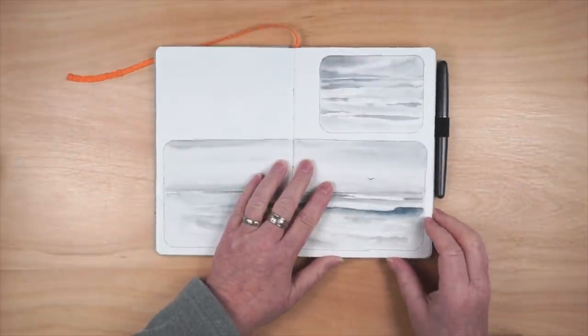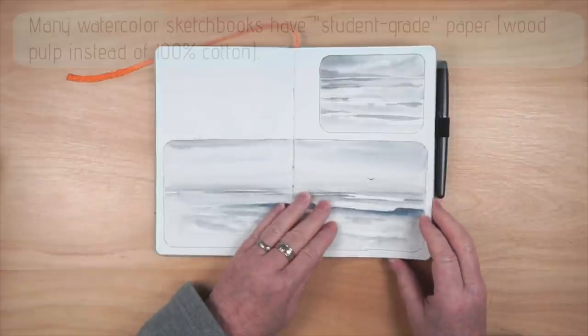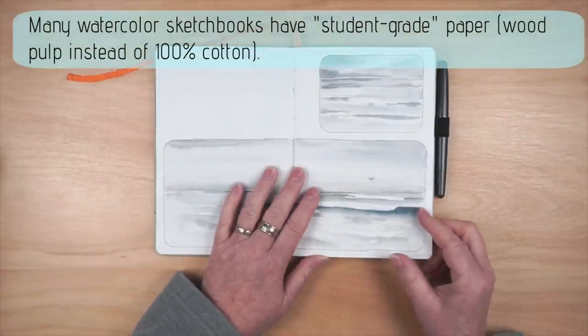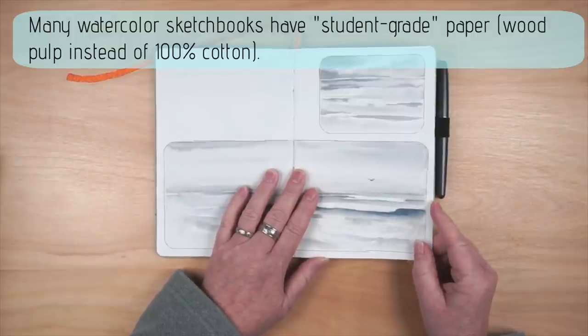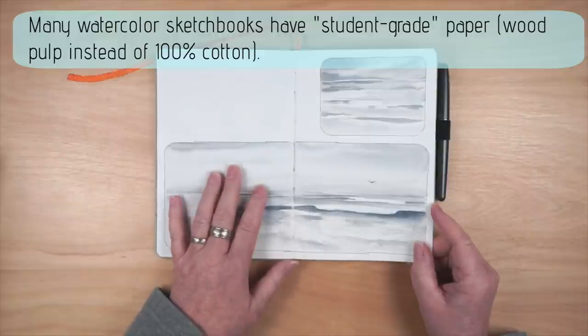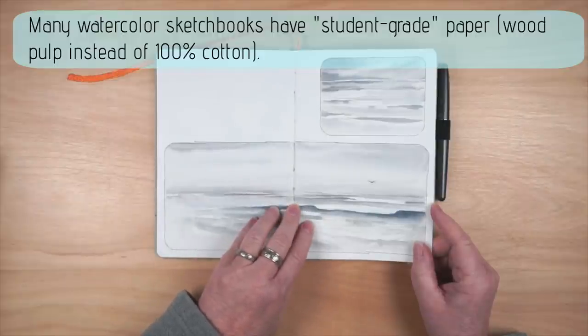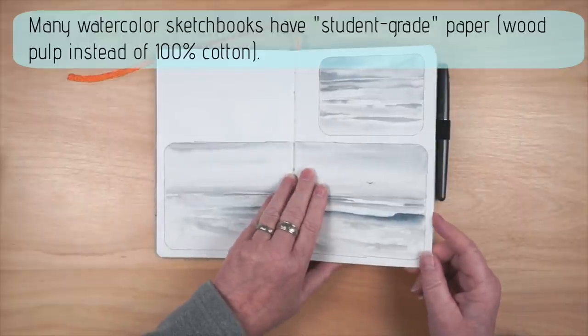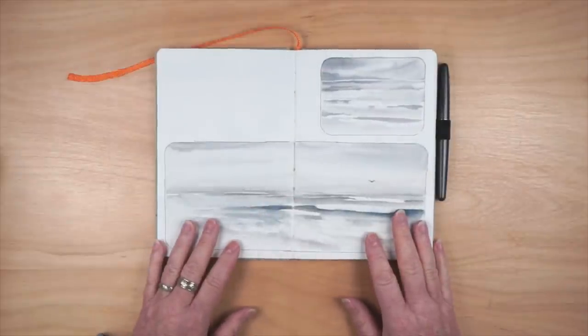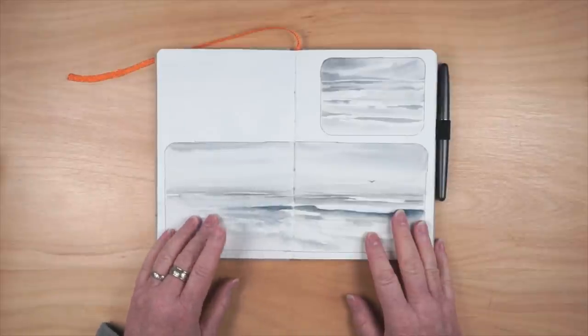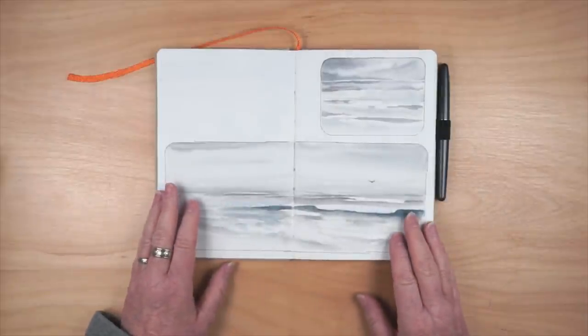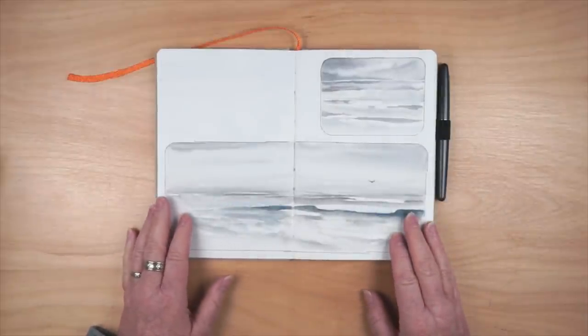Most watercolor sketchbooks, including this one, have more of a student-grade paper than the nice 100% cotton paper you might be using in your studio. This helps keep the costs down. Often it's a little bit lighter weight so they can put more pages into the sketchbook. And I find that I don't really mind this for a sketchbook. I don't mind if my washes are a little streaky or the colors aren't exactly the same. If I'm doing color testing, I can glue in some little pieces of my usual watercolor paper, and you'll see an example of that in a moment.